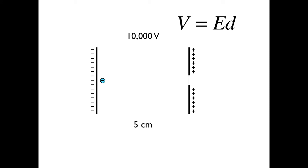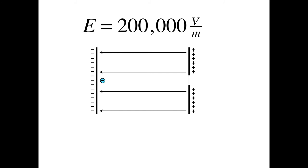To figure out what that speed is, we start with the formula voltage equals electric field times distance. Using a voltage of 10,000 volts and a distance of 5 centimeters, we get an electric field of 200,000 volts per meter.